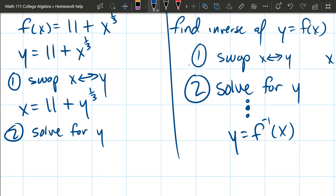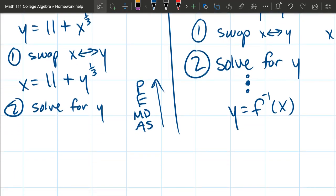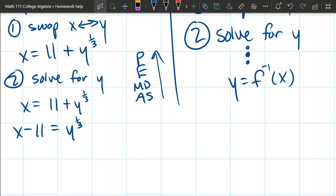So we look at this, y, right here, has two friends. It's got an 11 friend and a one-third friend. When you're unsure about what to do first, I recommend go up the order of operations when you're doing algebra and you're not sure. So I see addition-subtraction happening. Let's get that 11 friend out of here. So we're gonna subtract 11 on both sides. So we have x minus 11 equals y to the one-third.